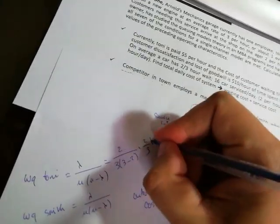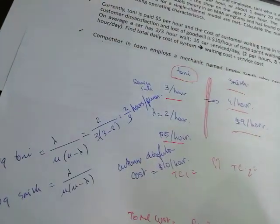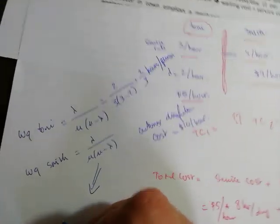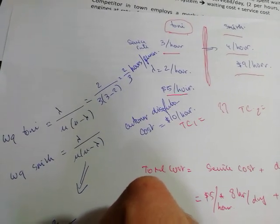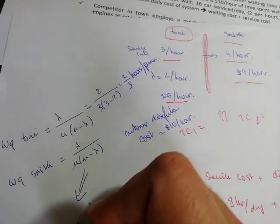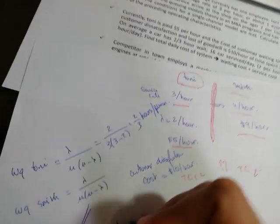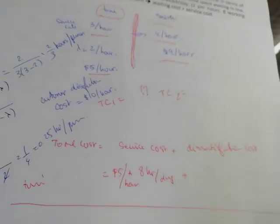For Smith, he serves four per hour and people are arriving at the same rate of two per hour. So we have two over (four minus two), which is two over four, or one over four, which equals 0.25 hours per person.